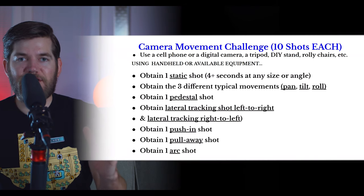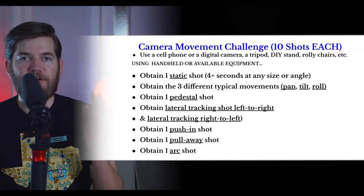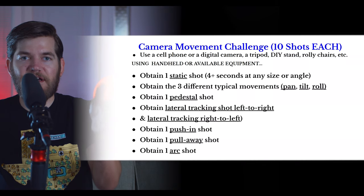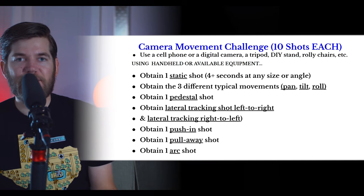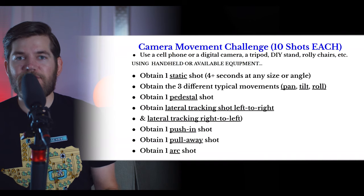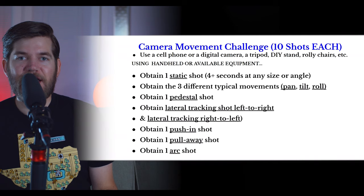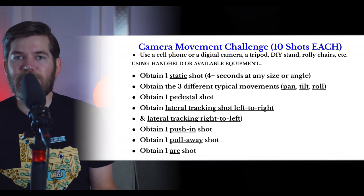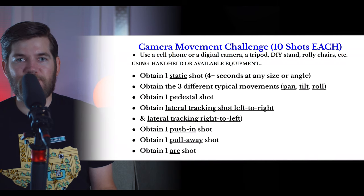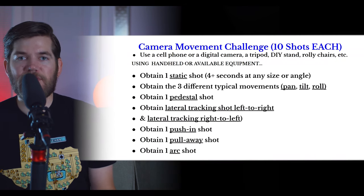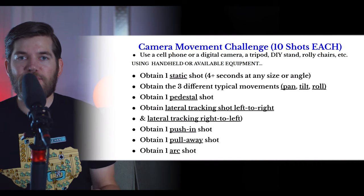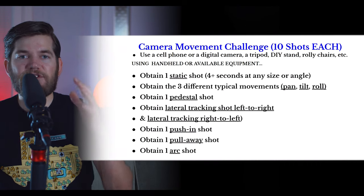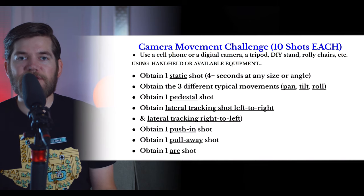Next up, I want you to achieve a push-in shot. Remember, you're moving forward towards a subject — you are not rotating the camera at all. The lens stays pointed at one subject and your body and camera are moving forward towards it. You might be able to get creative to imitate a dolly shot — for example, an office chair with wheels on a smooth surface or a wheelchair on a smooth surface can achieve a smoother push-in. Or if you have a towel on a smooth surface, you can push it so whatever's on top moves smoothly.